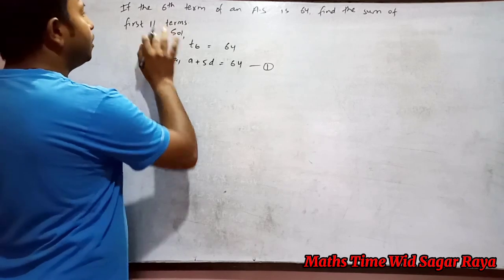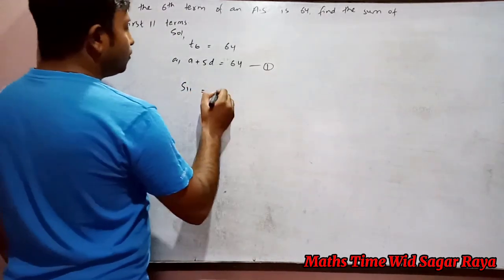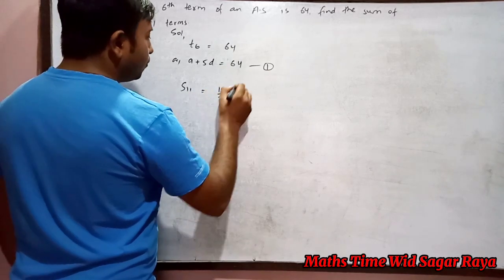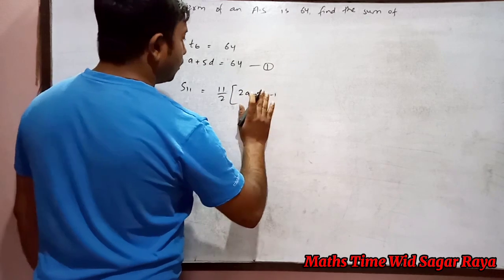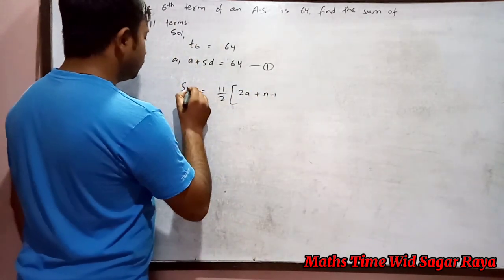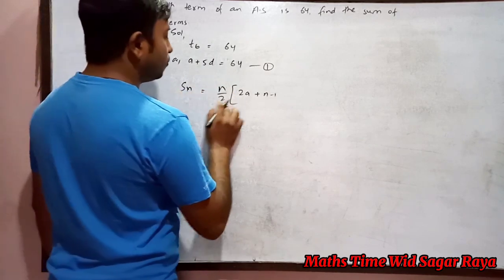We have to find s11. So s11 formula will be 11 by 2, 2a plus n. Let's write the formula of sn: sn equals to n by 2 times 2a plus n minus 1 times d.